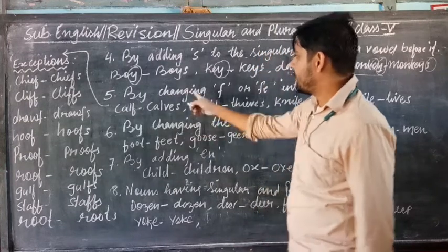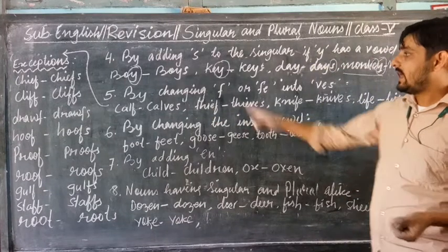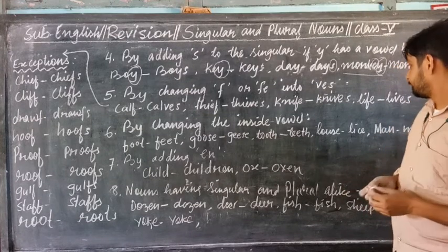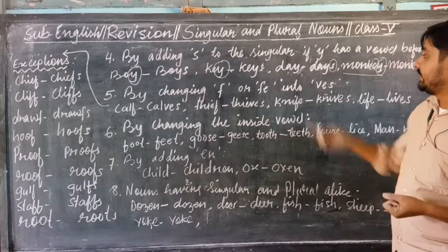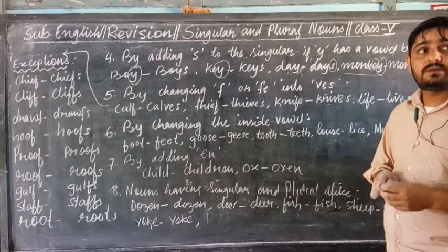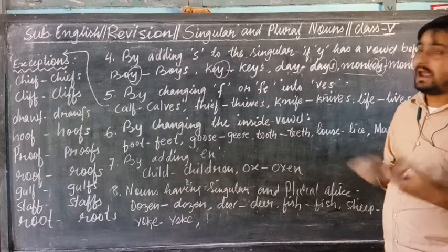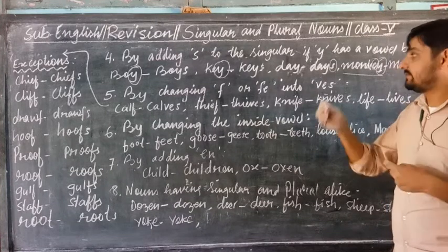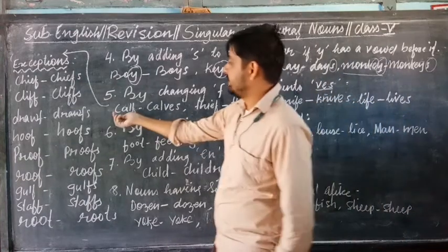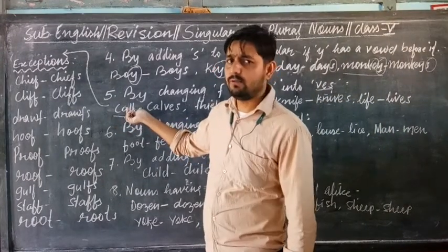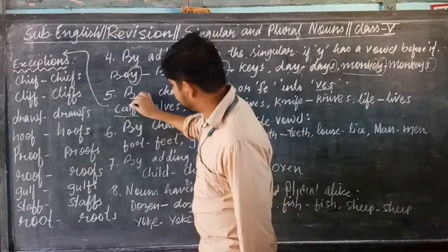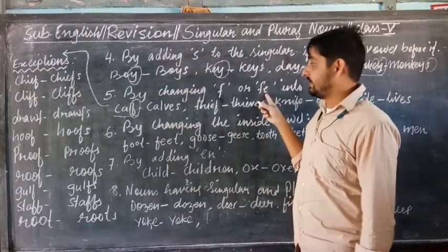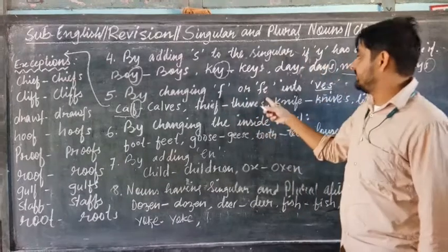Point number 5: by changing F or FE to VES. If a singular noun has F or FE at the end of the word, we change this F or FE to VES to form the plural.